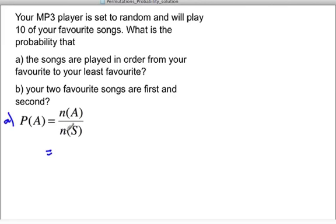The probability that this happens will be the number of ways it can happen. Well, that's 1 over, and the number of ways that you can play 10 songs will be 1 over the permutation of 10 choose 10, which is equal to 1 over 10 factorial.